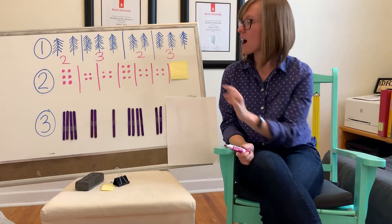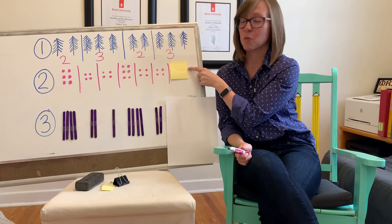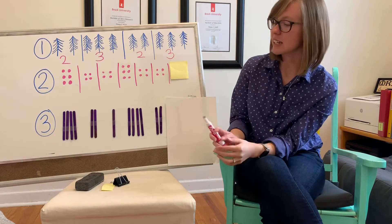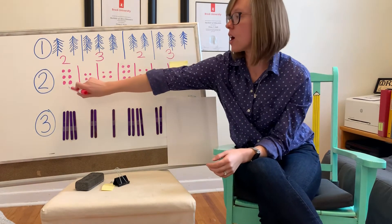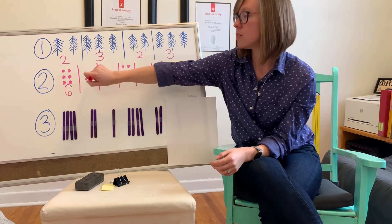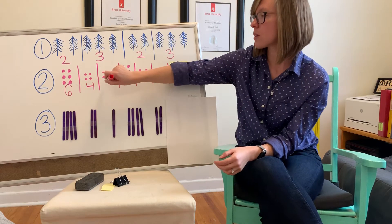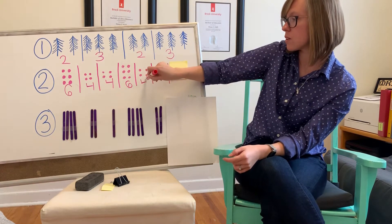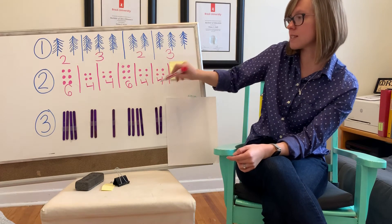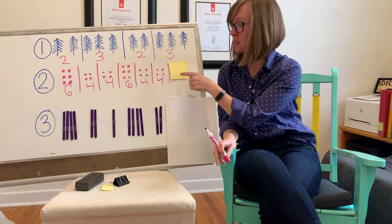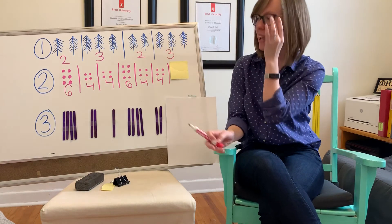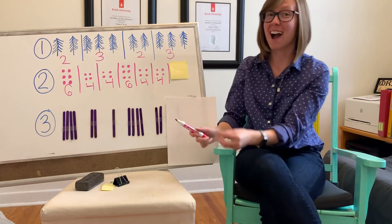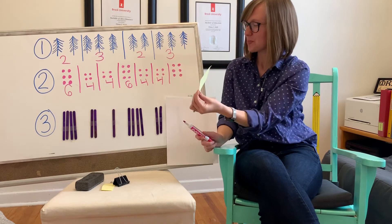Now that we figured that out, I was hoping that you boys and girls could figure out what's underneath this post-it in pattern number two. I see that there are six dots, four dots, four dots, six dots, four dots, four dots. Let's say this together to help figure out what's going to be underneath of this one: six, four, four, six, four, four. Underneath this one is six.